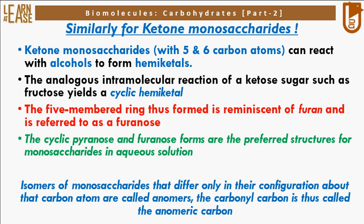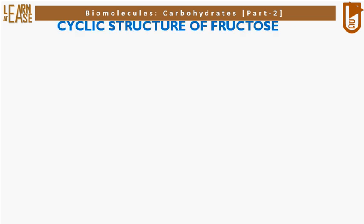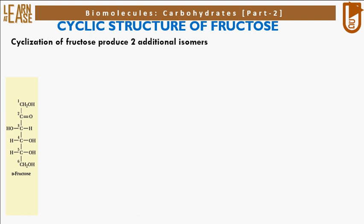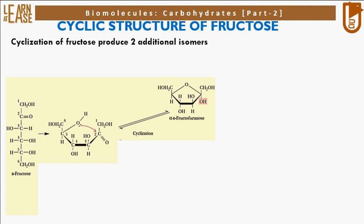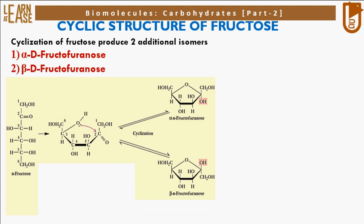Now let me show you the cyclic structure of fructose and the process of cyclization of fructose. Cyclization of fructose produces two additional isomers. The image describes the cyclization of fructose: the oxygen of the alcohol group on the C5 position of fructose — that is, the 5th carbon — reacts with carbon C2 by nucleophilic attack, as shown in the image, causing cyclization. On cyclization, two products are formed: alpha-D-fructofuranose and beta-D-fructofuranose.